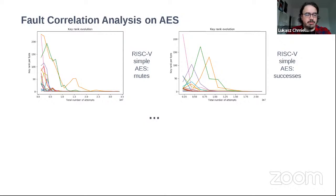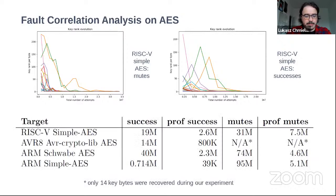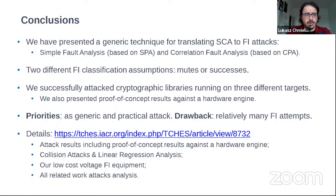In the case of mutes, many times the device will reset regardless of what's happening with the crypto. We also present results for three other implementations. While a lot of faults are necessary, we also analyzed what happens if you know more or less exactly where to inject — then slightly fewer faults are needed. In one case we didn't recover all key bytes: we recovered 14, so we believe we didn't collect enough traces.